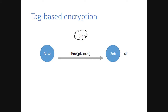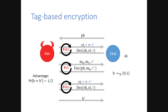So what is tag-based encryption? It's an encryption where the encryption algorithm takes an additional input tau called a tag, and decryption also takes an additional input tau, and it decrypts a ciphertext for tau* when tau equals tau*—that is correctness. The security is similar to CCA security for tag-free encryption, except we require that the adversary queries the decryption oracle with a tag tau that must be different from the tag tau* used in the challenge ciphertext. This can be enforced using, for instance, collision-resistant hash functions, and the security proof crucially relies on this property.